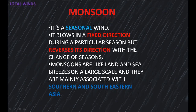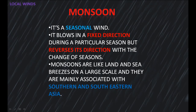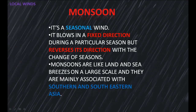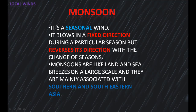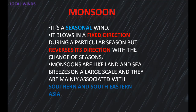Monsoon is a seasonal wind. It blows in a fixed direction during a particular season, but reverses its direction with the change of seasons. Monsoons are like land and sea breezes on a large scale and they are mainly associated with southern and southeastern Asia.